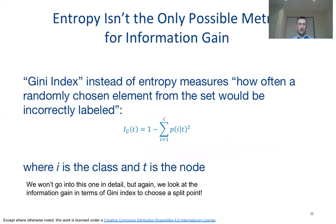Besides entropy, another construct you can use is the Gini index. It similarly measures uncertainty in the data, is maximized at one, and minimized at zero. We won't go into details here, but there are different possibilities that can be used.